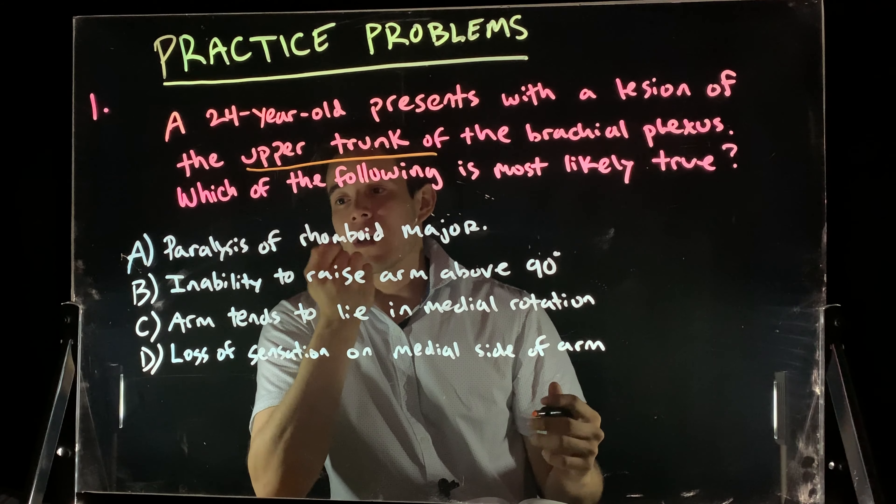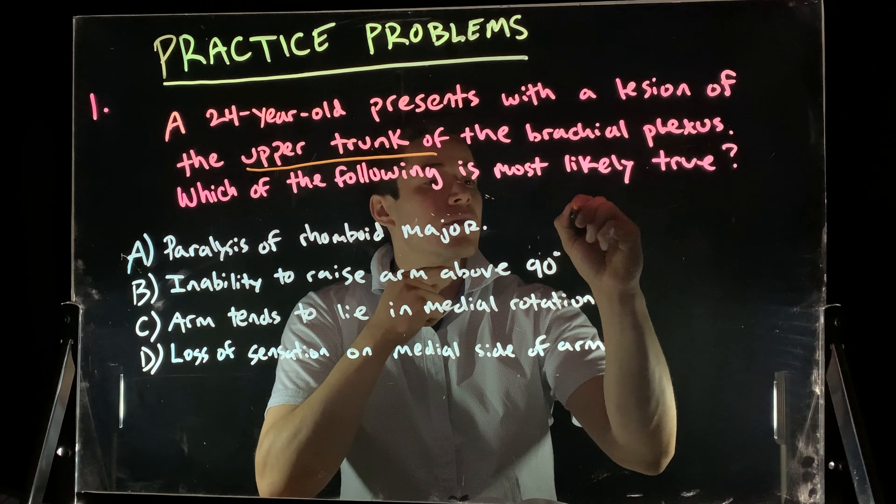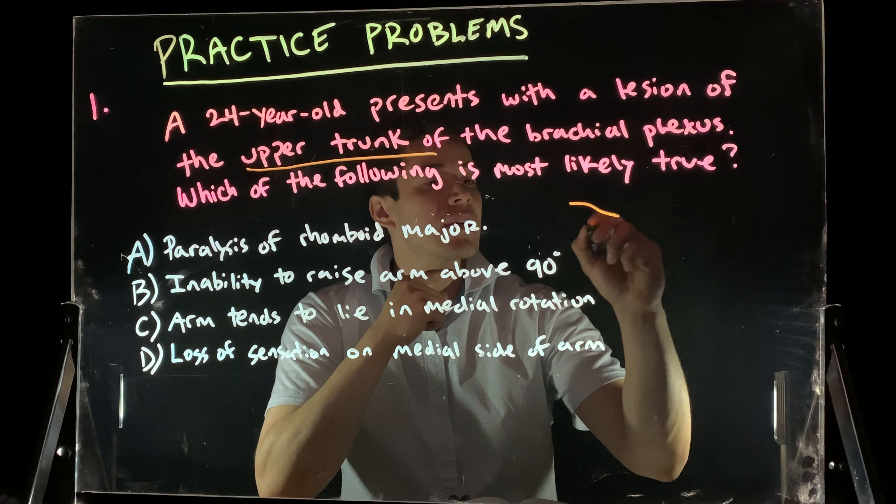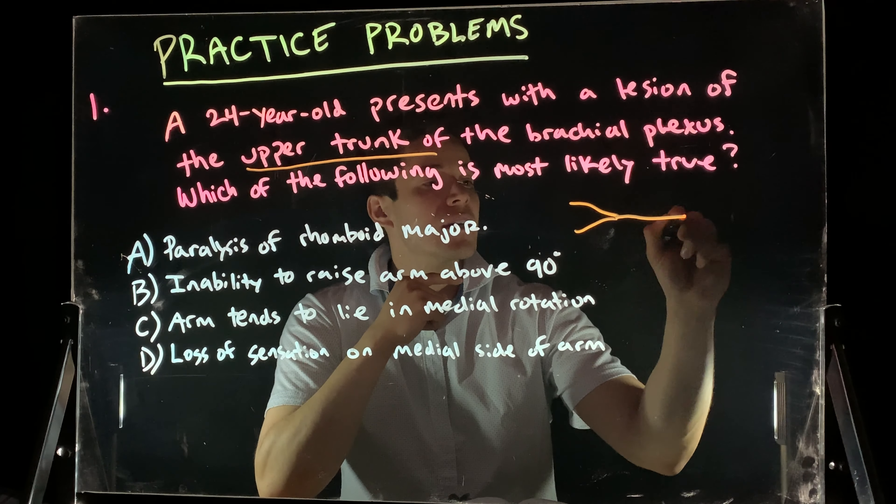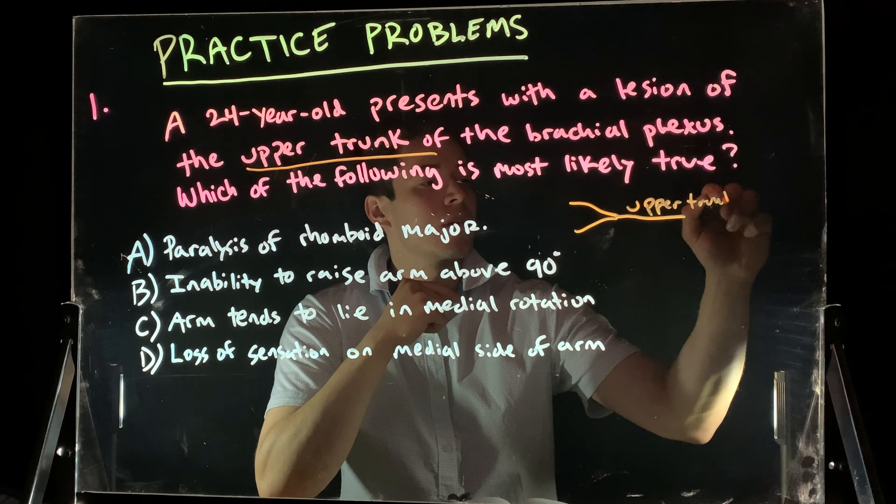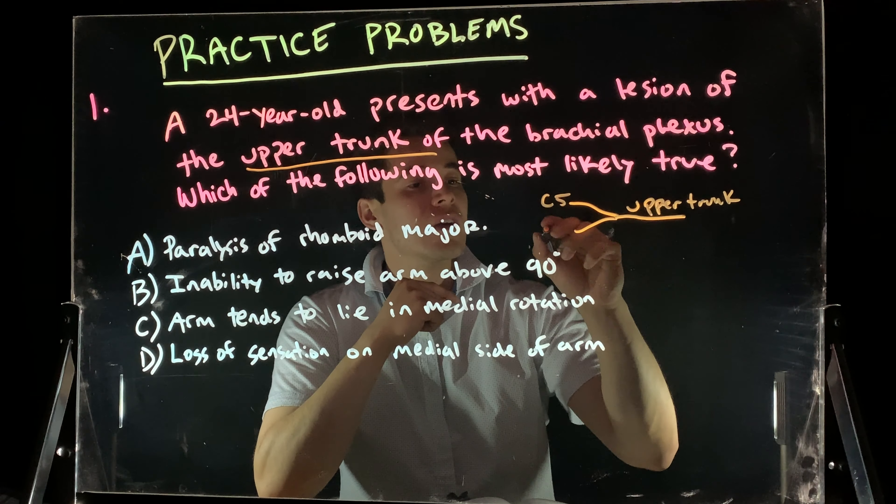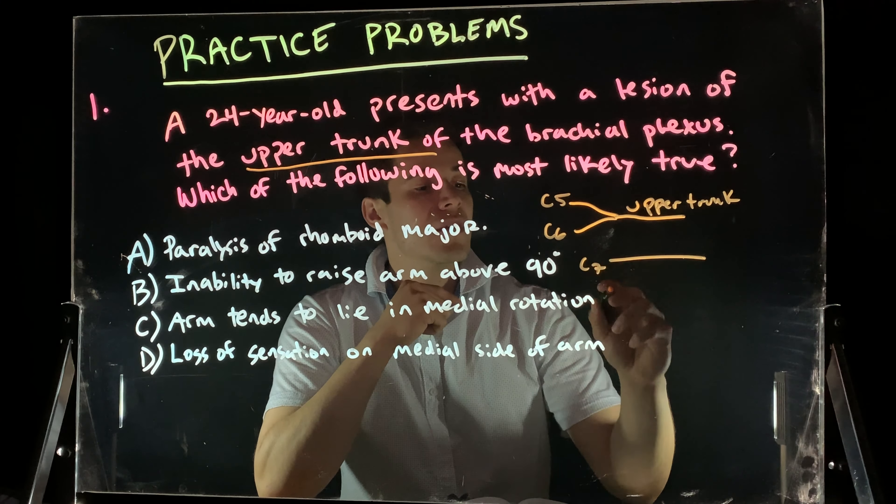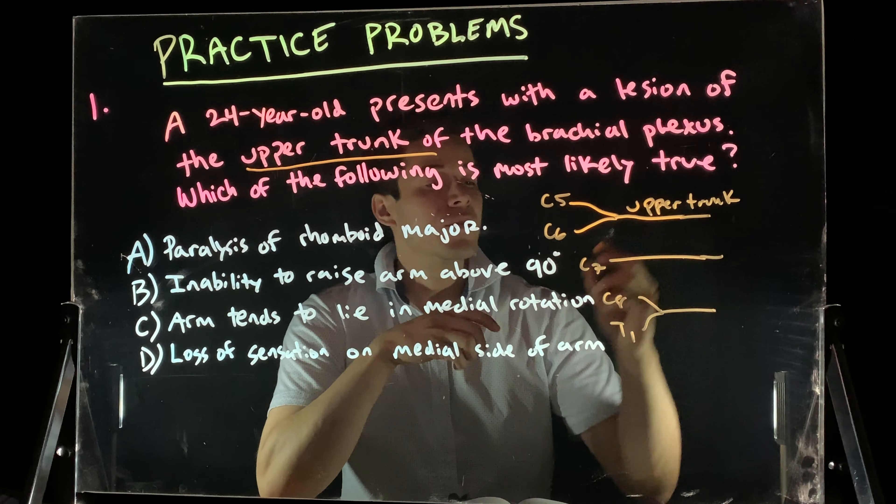Now, my upper trunk, I know if I have, here we have C5 and C6 come together, they form my upper trunk. So, here's C5 and C6. Then we have C7, and then we have C8 and T1 come together. This is what we're dealing with.